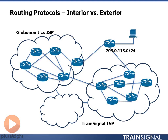I acquire my own IPv4 network IP space of 203.0.113.0/24. I basically tell the TrainSignal ISP and GlobalMantics ISP about my network address that I received from the IANA — the Internet Assigned Numbers Authority. In this case, I'm telling TrainSignal that they're my primary internet service provider.